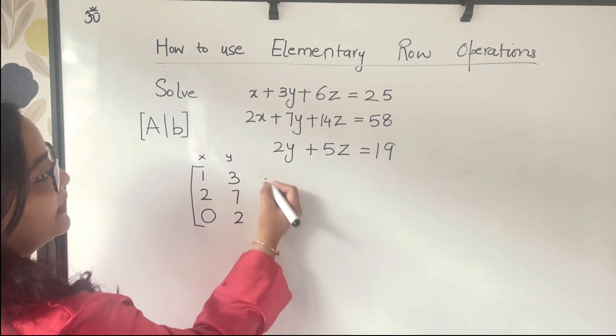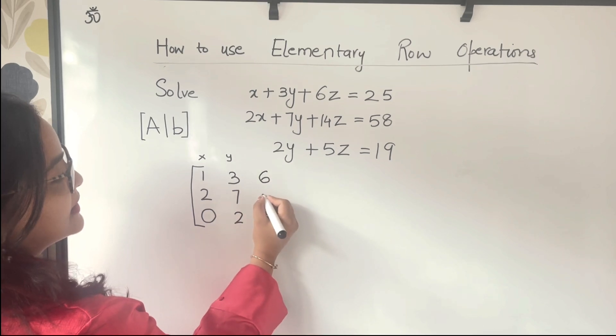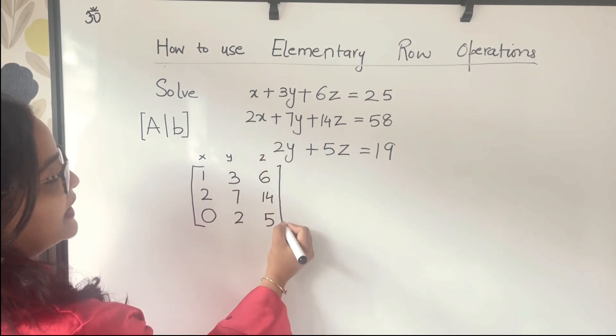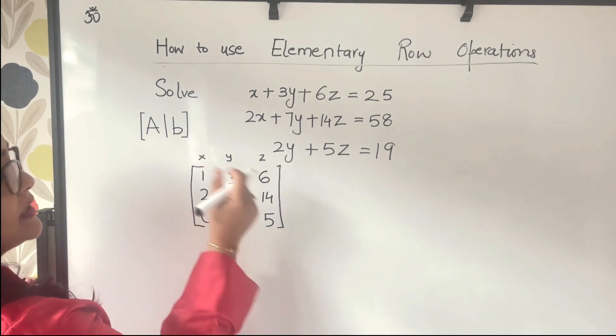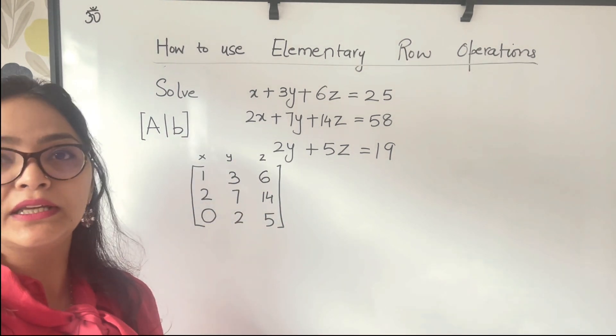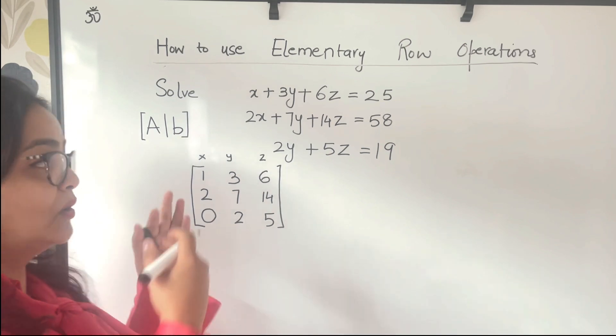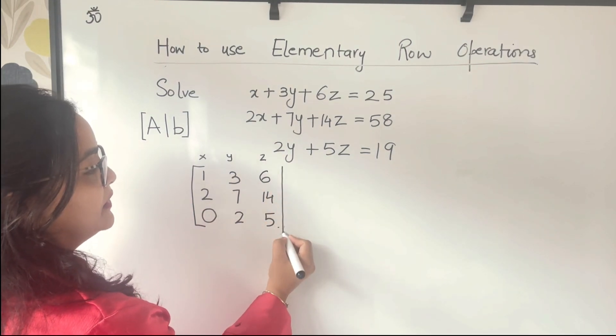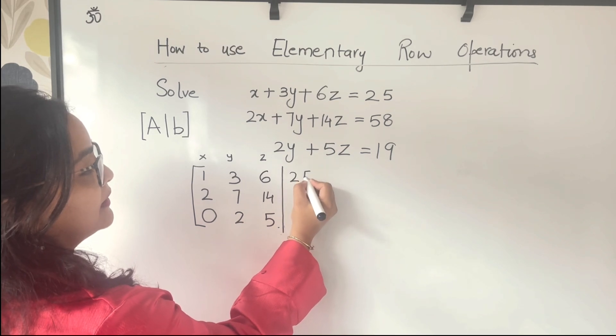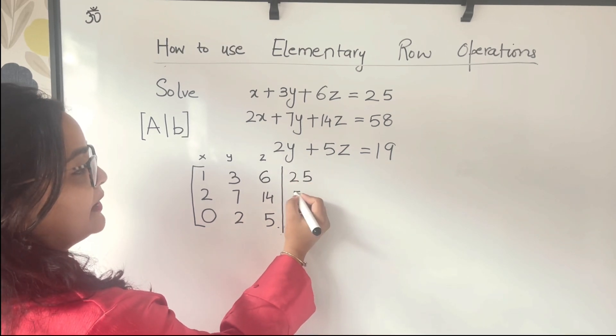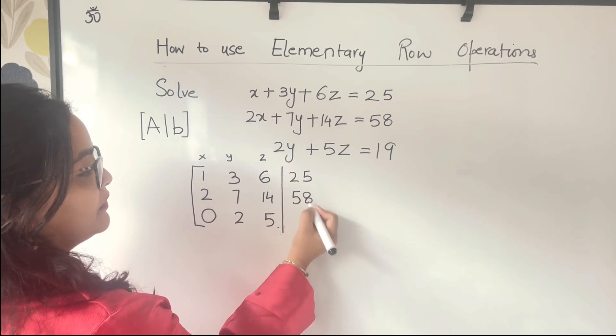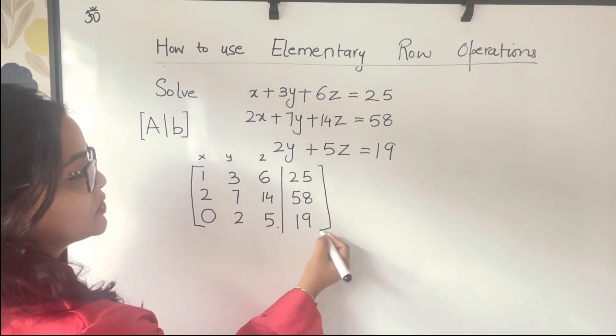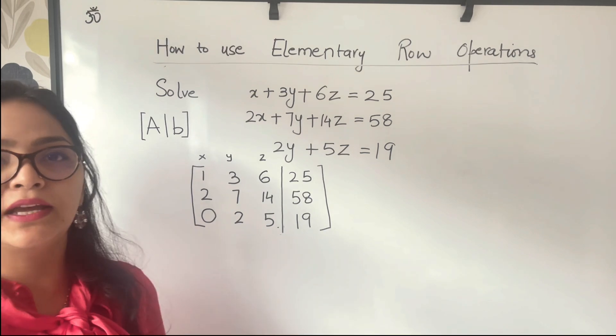What we have here is 6, 14, 5, the coefficients associated to z. Now the augmented system means that we will be taking up the right hand side as well along with the left hand side. So you have a bar here and corresponding right hand side: 25, 58, 19. This is the matrix formulation that we have for our case.